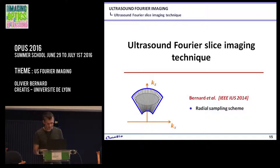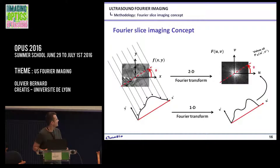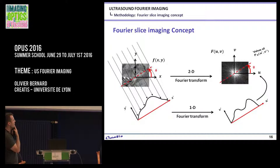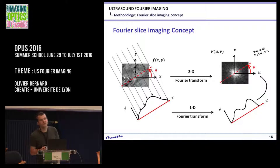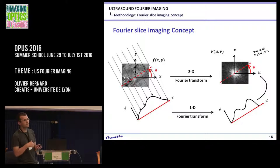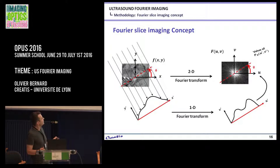Our idea was to mimic what has already been done in other modalities — to work with the Fourier slice imaging concept. The idea is very simple; it's a basic property of the Fourier transform. Imagine you have an image in x-y and you do the 2D Fourier transform.